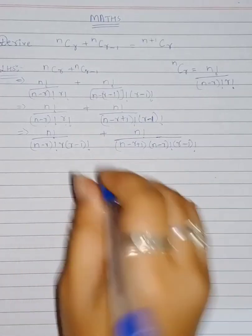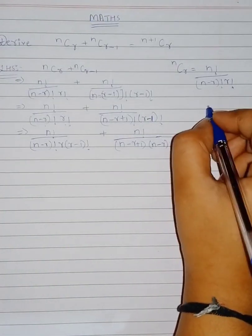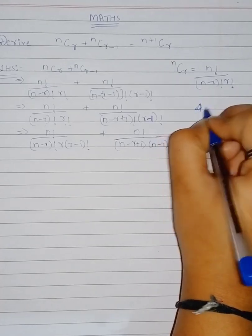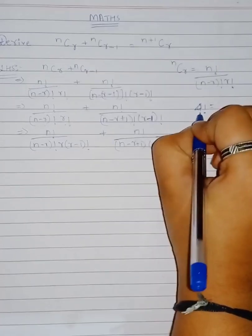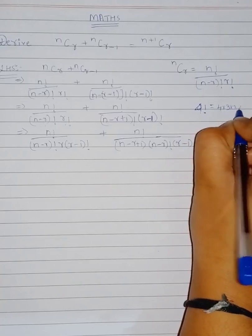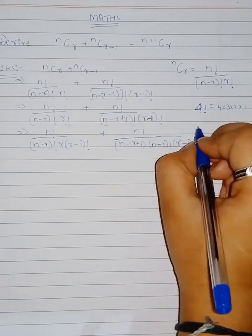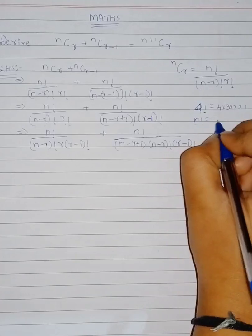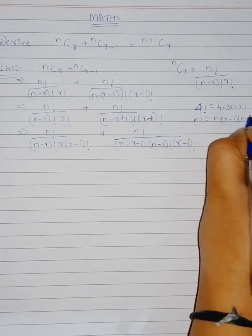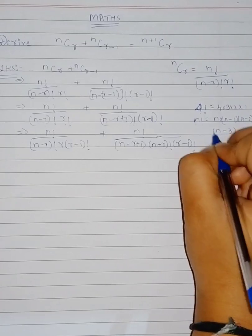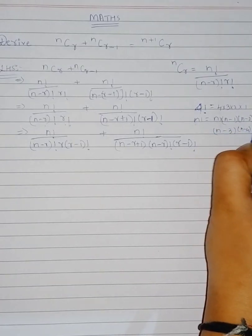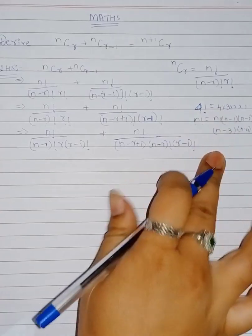Let me explain how this expansion works. For example, 4! = 4 × 3 × 2 × 1. The general formula is n! = n × (n−1) × (n−2) × (n−3) × (n−4) and so on. Using this general formula, we can segregate factorial terms.